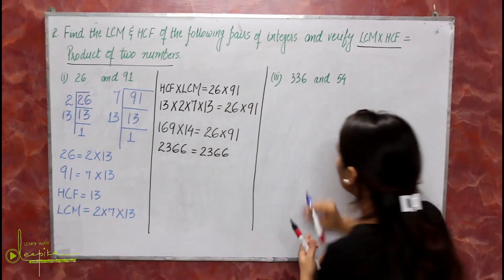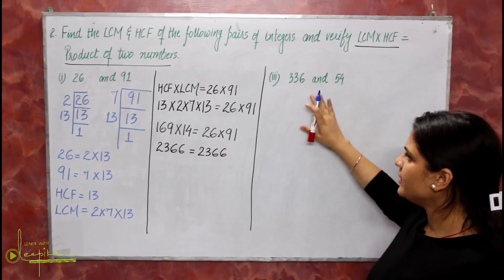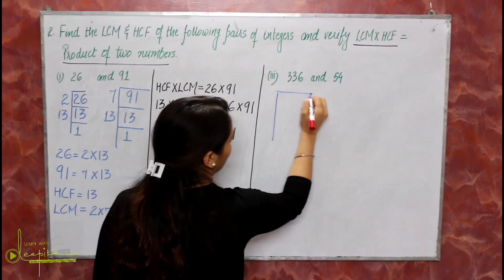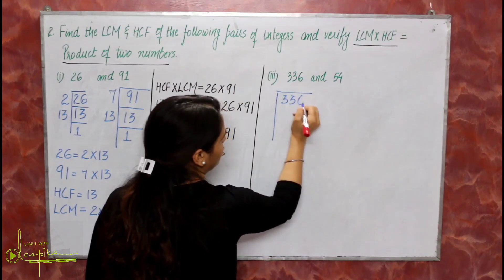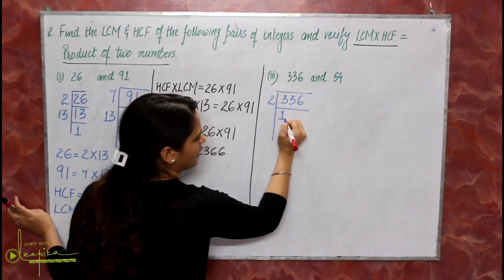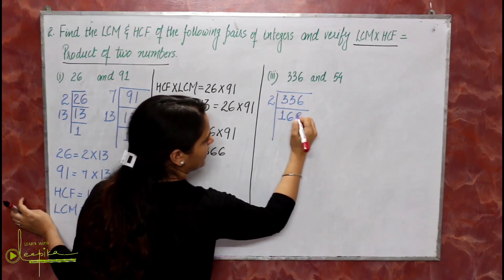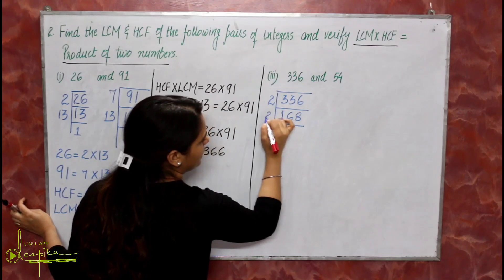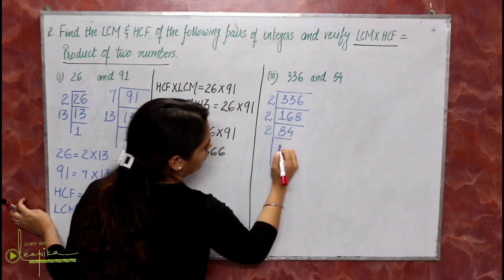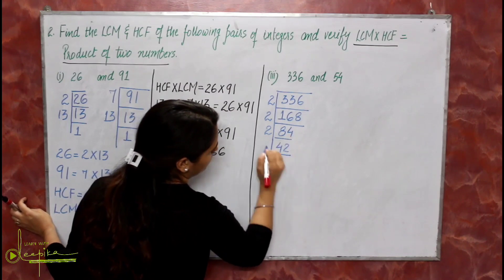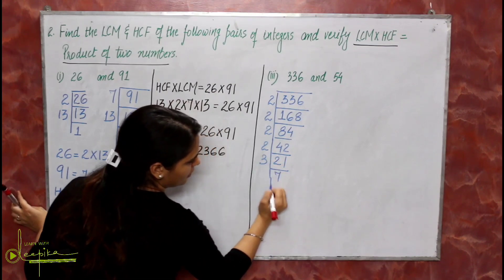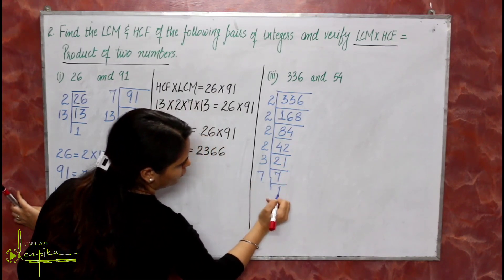Now the third question — numbers are 336 and 54. We do prime factorization. For 336: dividing by 2 repeatedly — 336 → 168 → 84 → 42 → 21 → 7 → 1. So 336 = 2⁴ × 3 × 7. For 54: dividing by 2 gives 27, then by 3 repeatedly — 27 → 9 → 3 → 1. So 54 = 2 × 3³.